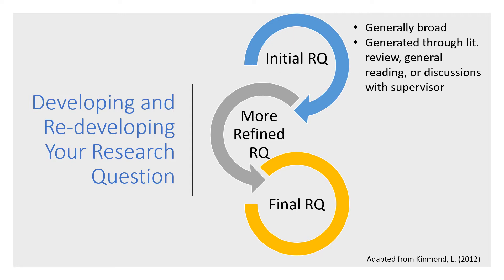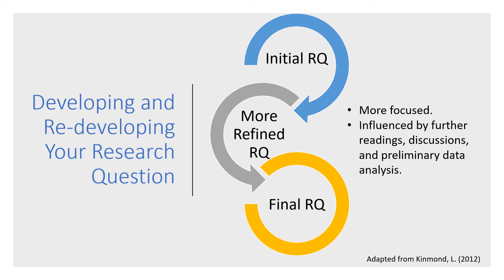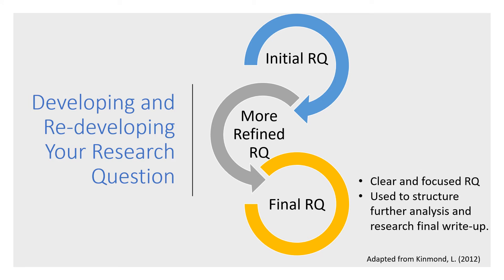Most of the time the initial question is generated through literature review, general reading, and discussions with your supervisor. As you read and discuss more, you will start refining your research question. After more discussions and perhaps looking into the preliminary results of your data analysis, you might make some adjustments. In the final process, you will get a clearer and more focused research question, which will be very helpful in structuring further analysis and the final write-up.